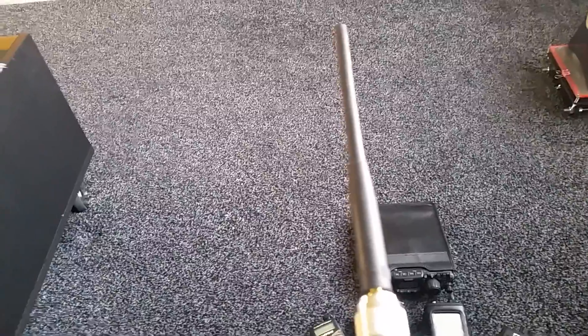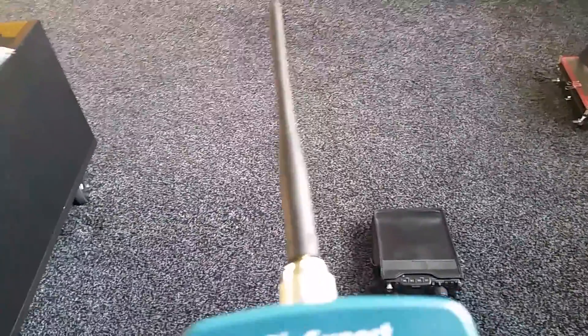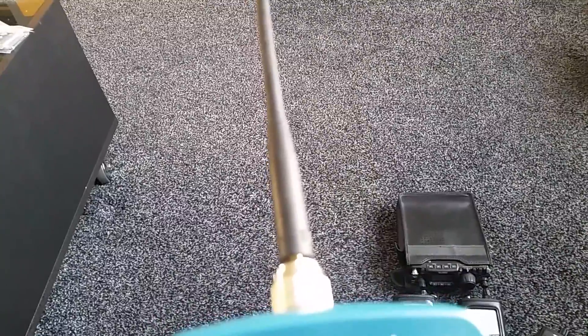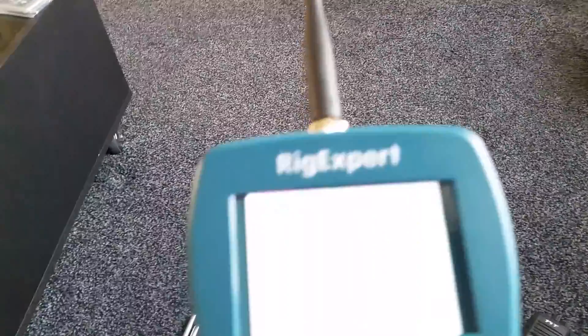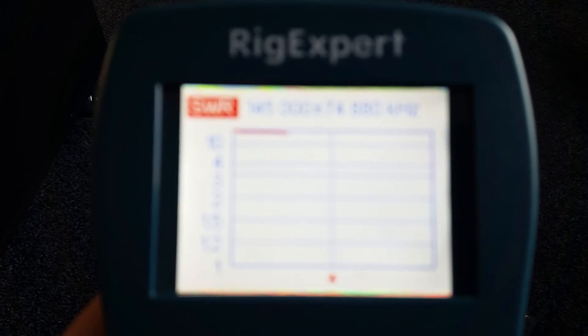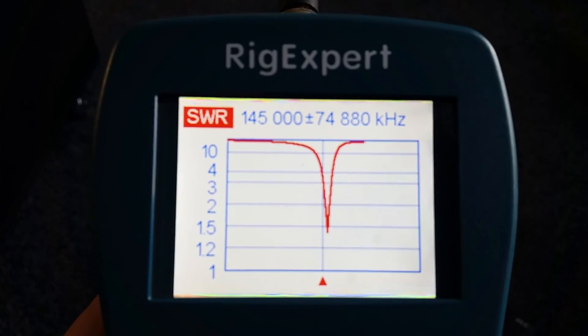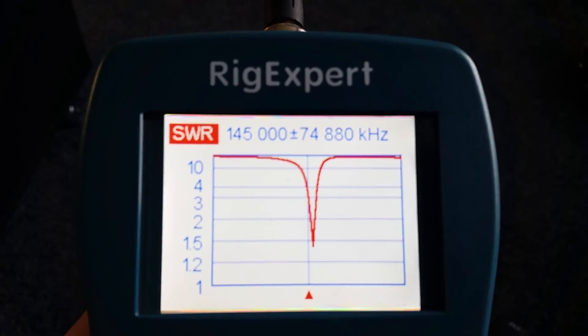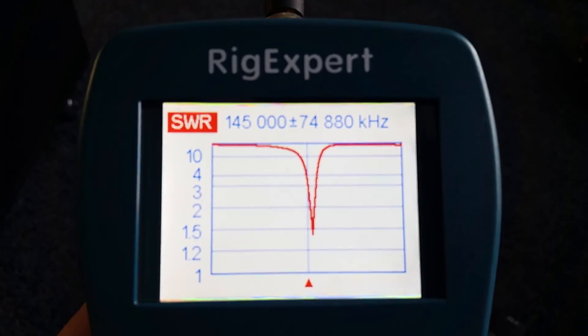Moving swiftly on, this is the Yaesu digital handset, the FT2D. And that's just under 1.5 to 1.